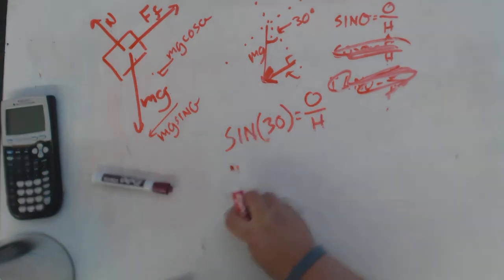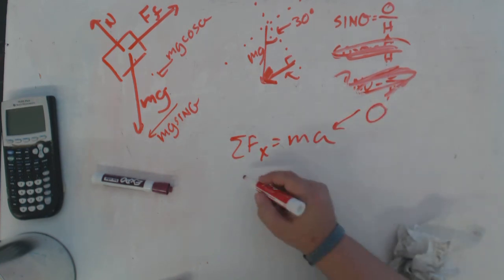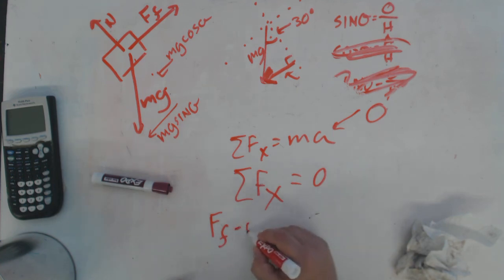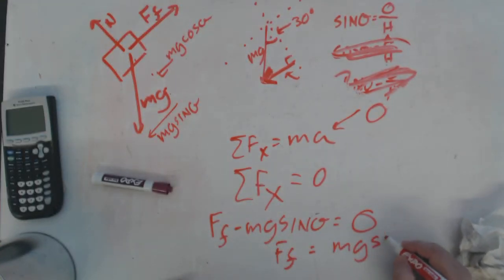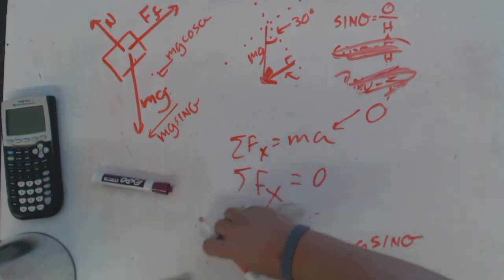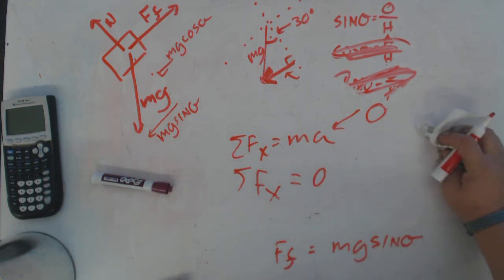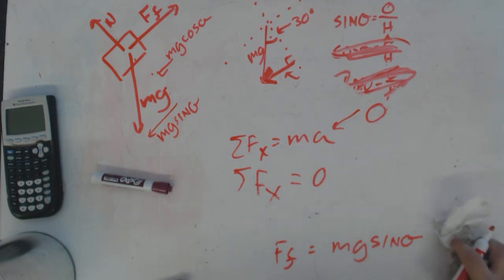Back to Newton's second law for the x-axis: the sum of forces equals ma, and since velocity is constant, acceleration is zero. So: force of friction minus mg sin θ equals zero, which means the force of friction equals mg sin θ. Whatever the weight of the object — 100 newtons, 200 newtons — the force of friction is directly related to that. That's how you determine the force of friction on an incline.